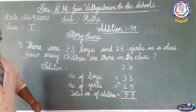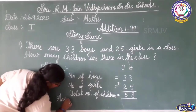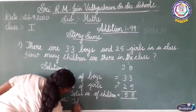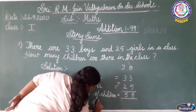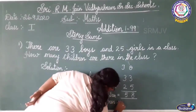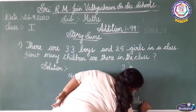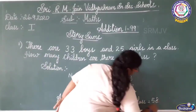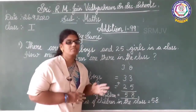At last, what do you have to write? Answer. Write the same sentence: 'Total number of children in the class is equal to 58.' Is it clear, children, everyone? Thank you, children. We will see you in the next class.